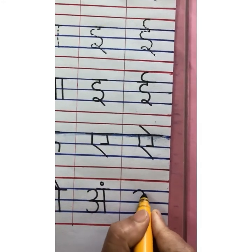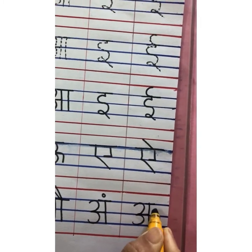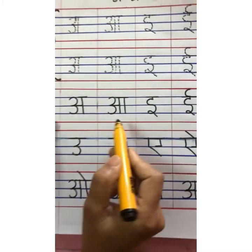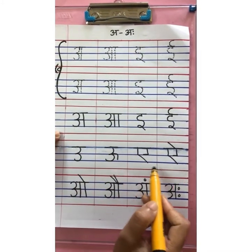And the last swar is a ha. O, a, e, e. O, o, a, a.